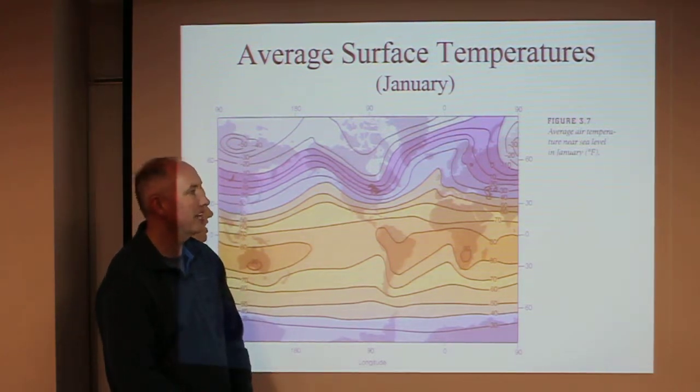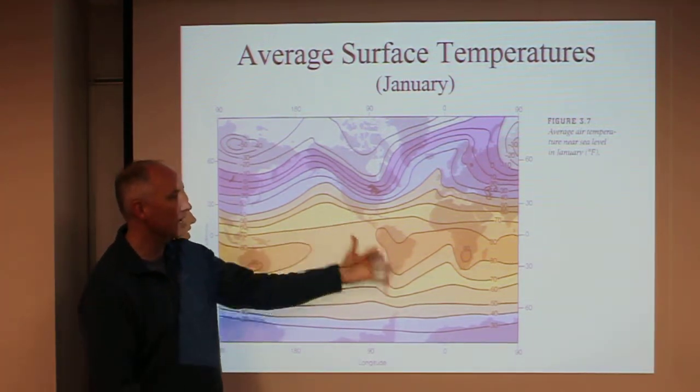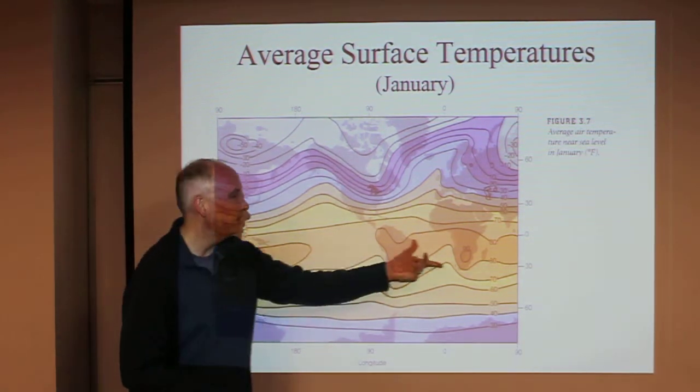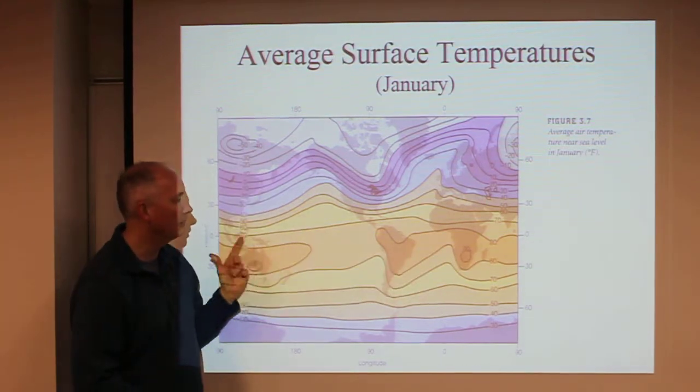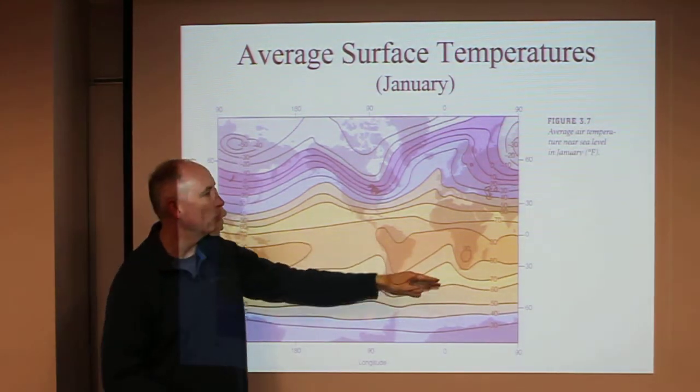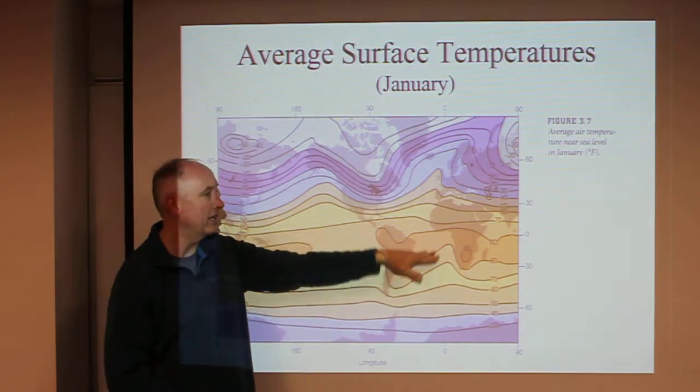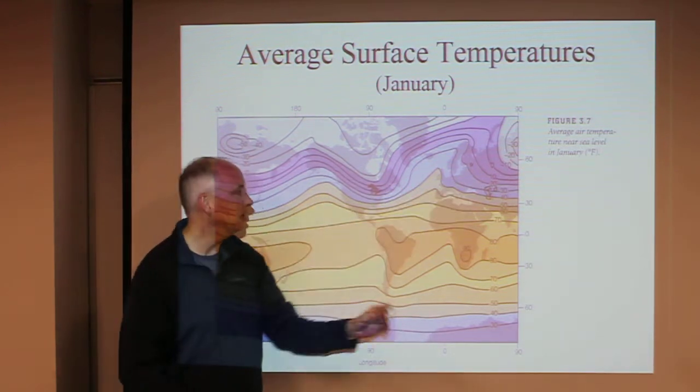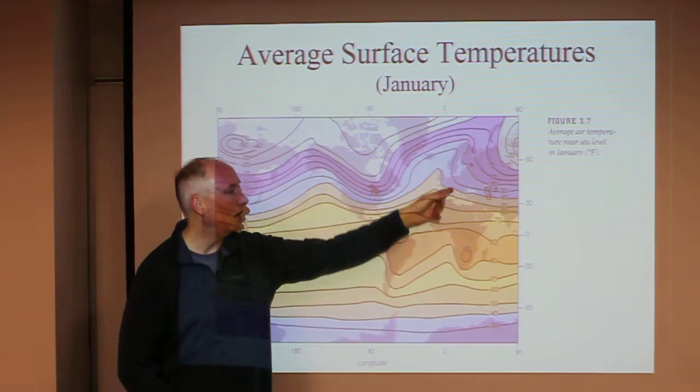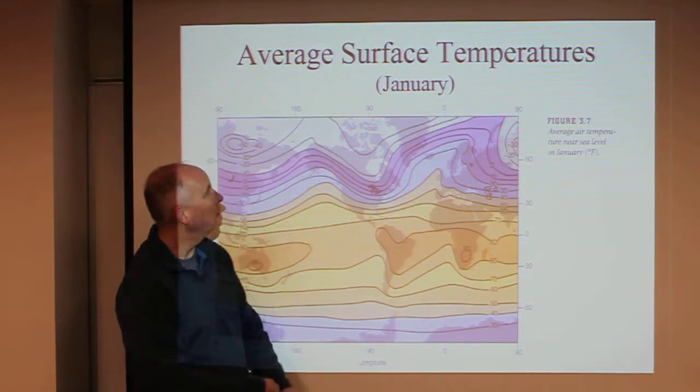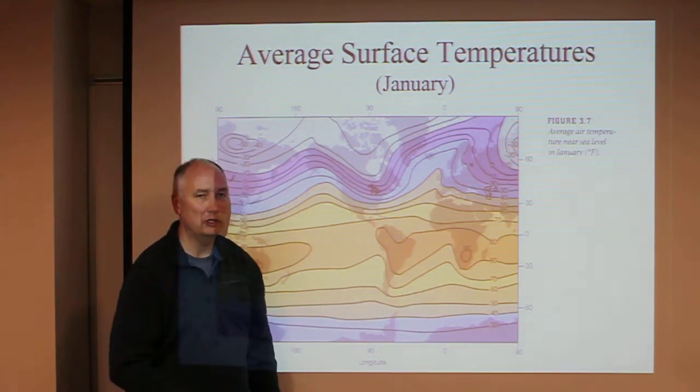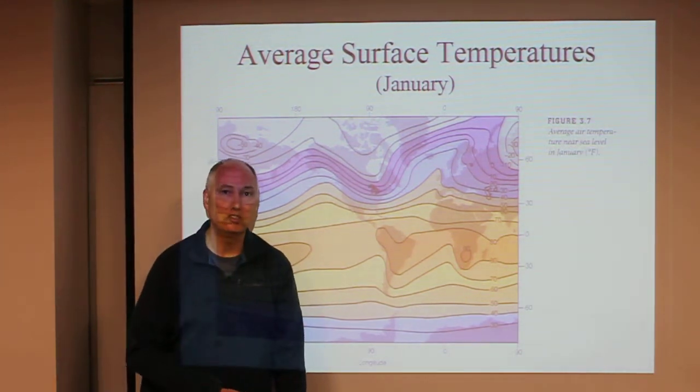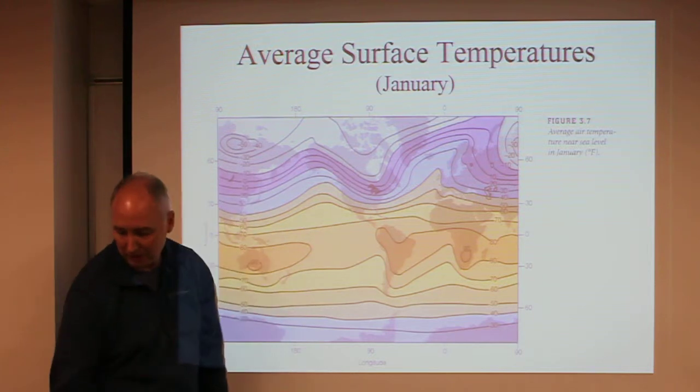The average surface temperature in January—this is a contour plot in degrees Fahrenheit. In January, the tropics are very warm. The Southern Hemisphere is warm because it's Northern Hemisphere winter and Southern Hemisphere summer. The continents are cold in the Northern Hemisphere winter; the oceans are warmer. Weather or climate? This is the average surface temperatures for January, not a single day. This is a representation of climate.